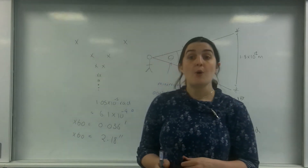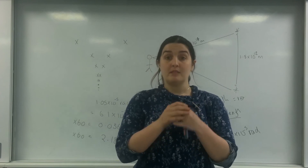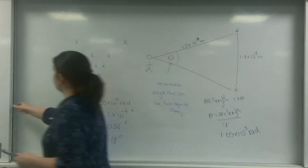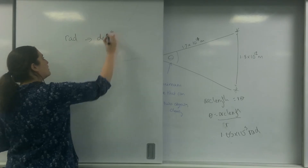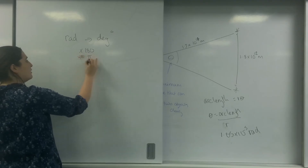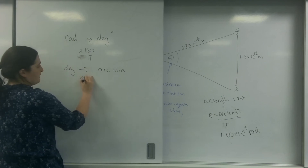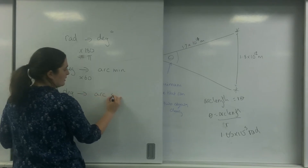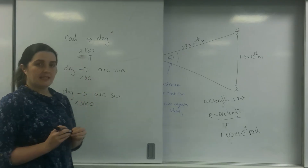So this is the resolving power of the object I'm observing — the minimum angle I am able to see two objects clearly, worked out using arc length. To recap the conversions: to go from radians to degrees, times by 180 and divide by pi. To go from degrees to arc minutes, times by 60. To go from degrees to arc seconds, times by 3600, because that's arc minutes times 60.